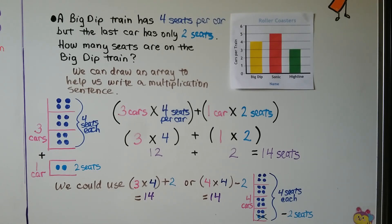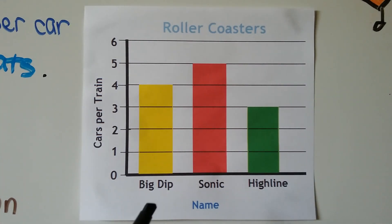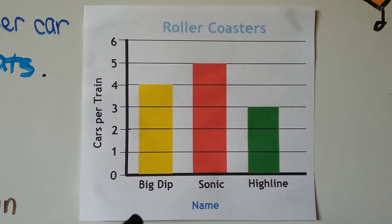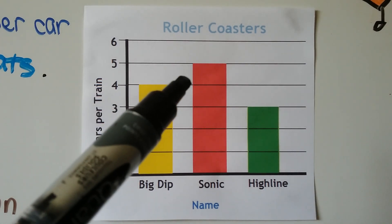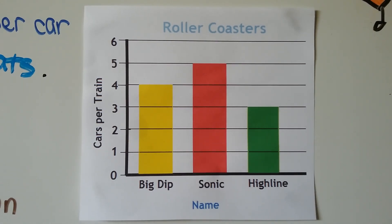A Big Dip train has four seats per car, but the last car has only two seats. How many seats are on the Big Dip train? Looking at our bar graph titled 'Roller Coasters,' we can see the Big Dip has 4 cars, the Sonic has 5 cars, and the High Line has 3 cars. The problem states the Big Dip has four seats per car, but the last car only has two seats.